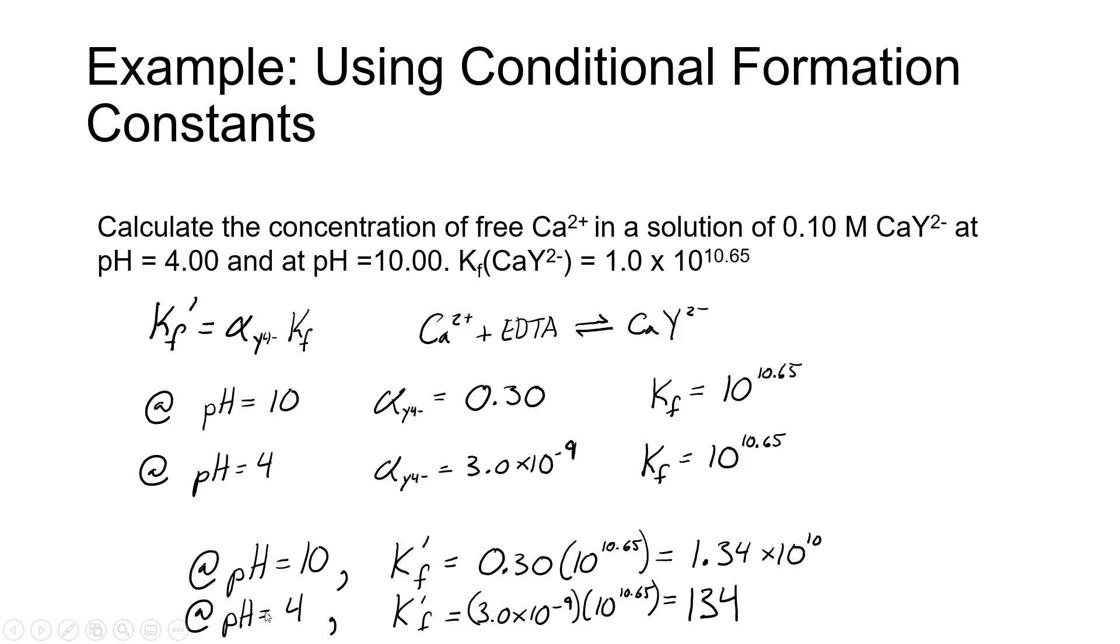If you do the same thing at pH 4, you have alpha value of 3.0 times 10 to the minus 9th times the same formation constant. The conditional formation constant at a pH of 4 is much lower, it's only 134.